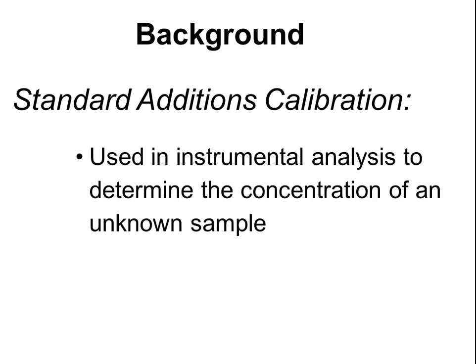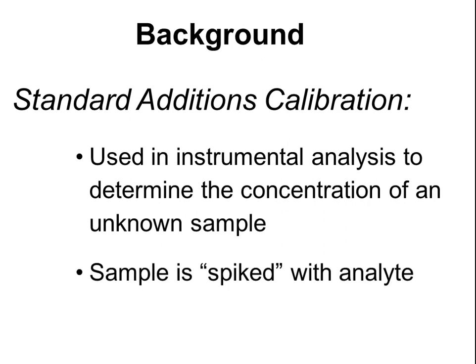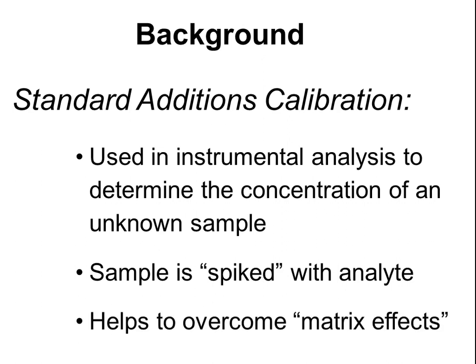Standard additions calibration is used in instrumental analysis to determine the concentration of an unknown sample. The sample is spiked with a known amount of analyte to create a series of different standards where the sample is present within each of those standards. It's a little bit different from standard series calibration, where you just calibrate with known amounts of analyte and then measure the unknown separately. This is done to help overcome matrix effects.